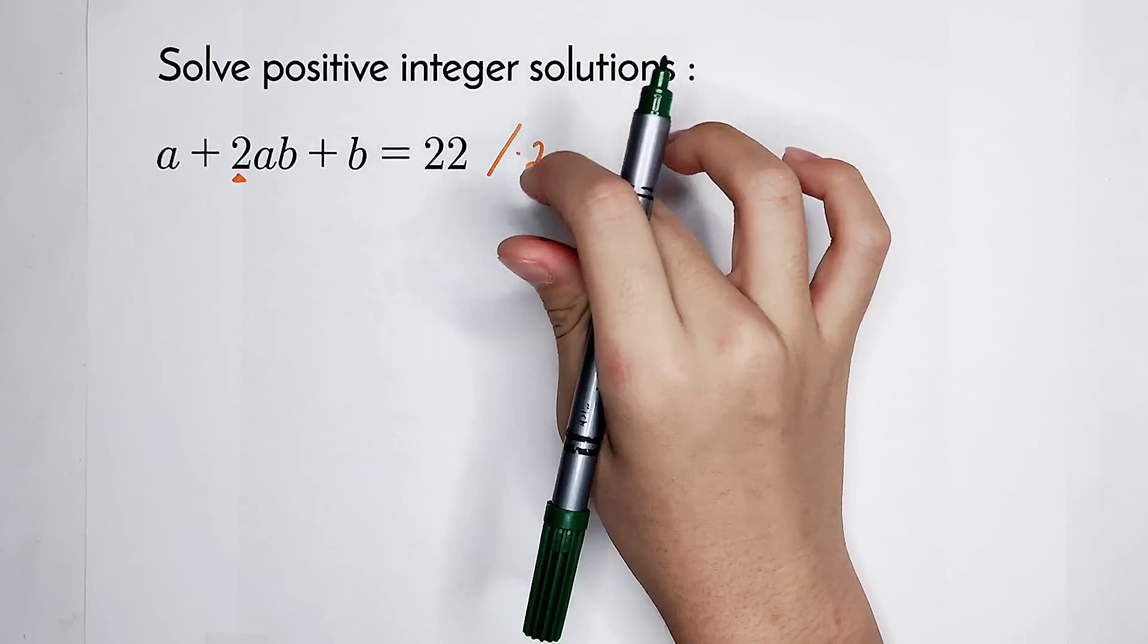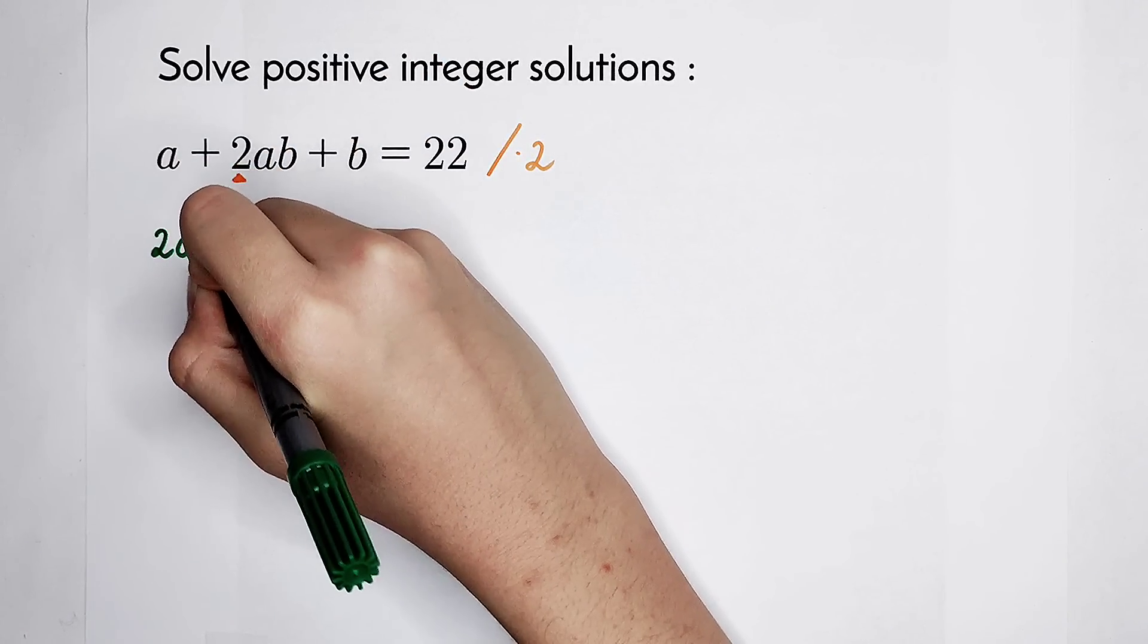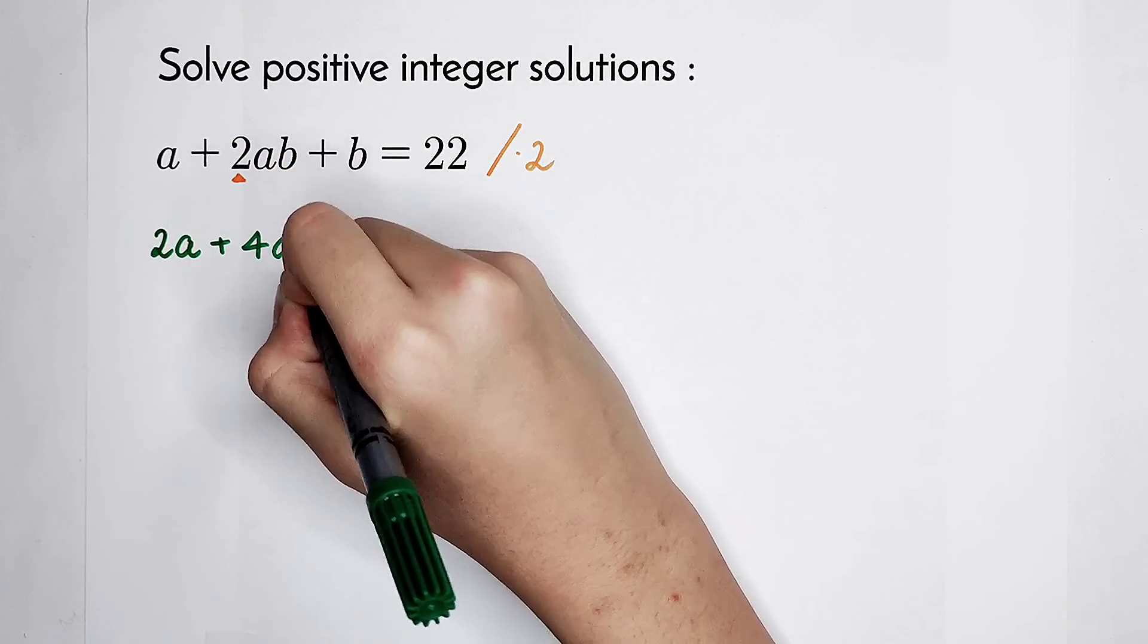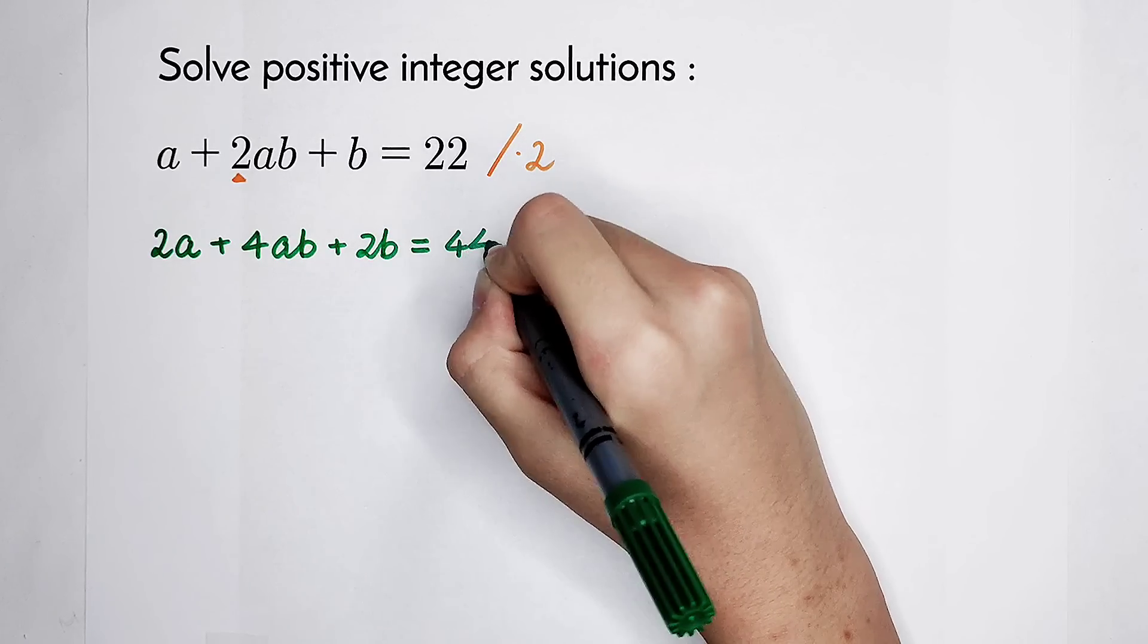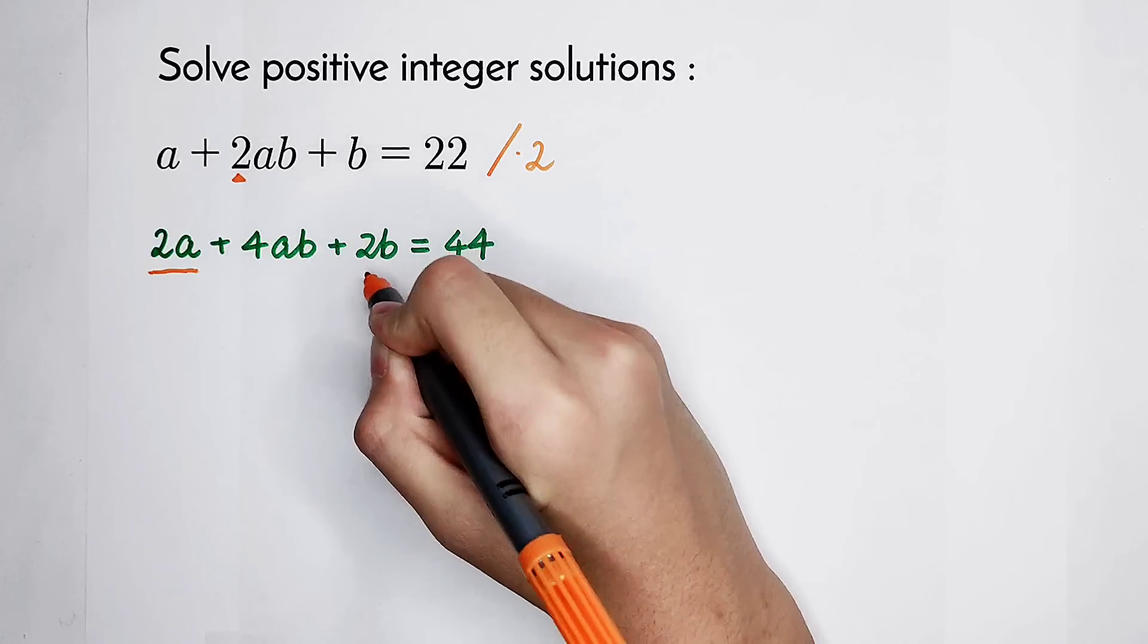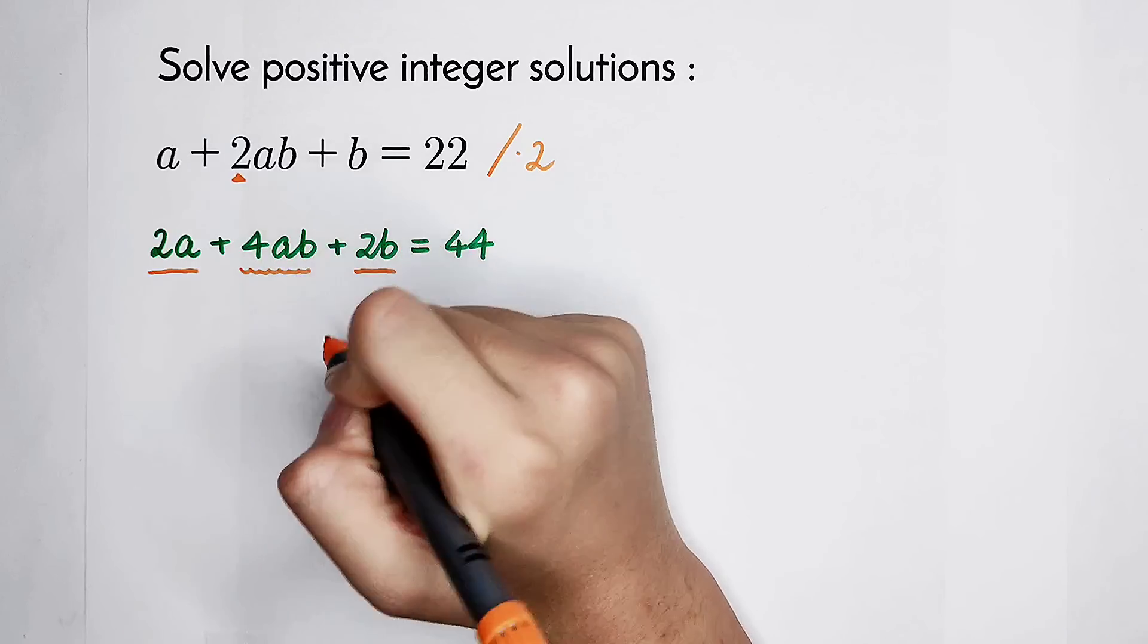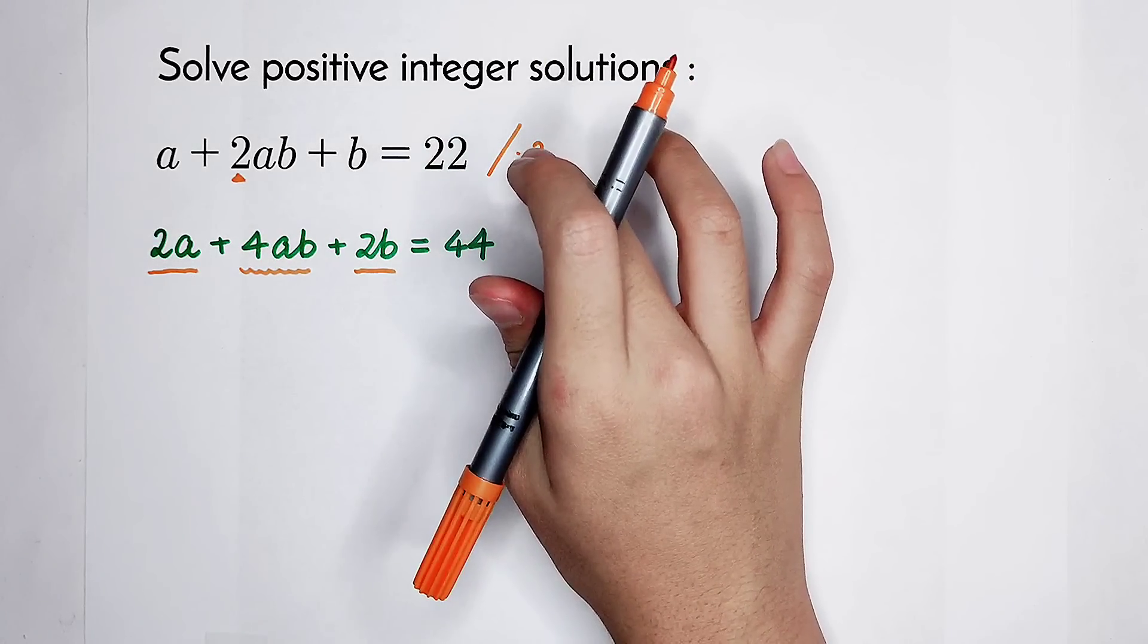If you multiply by 2 on the both sides, you can get a times 2 is 2a. 2 times 2 is 4. 2b, 44. Okay. 2a, 2b. This is the product of 2a and 2b. So that's why we are going to multiply by 2 on the both sides.